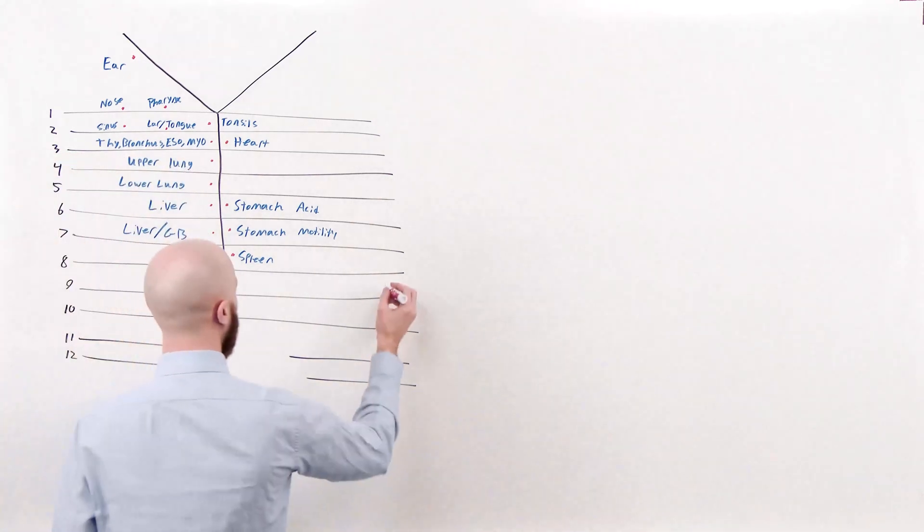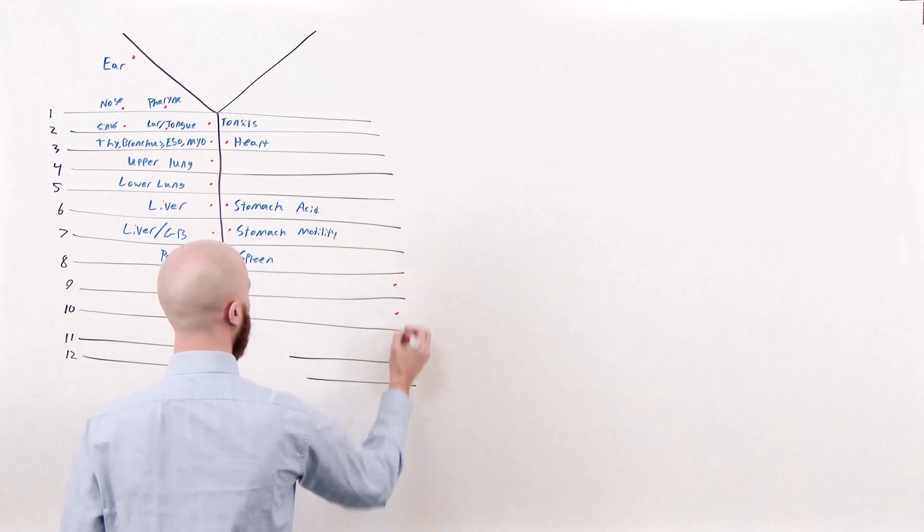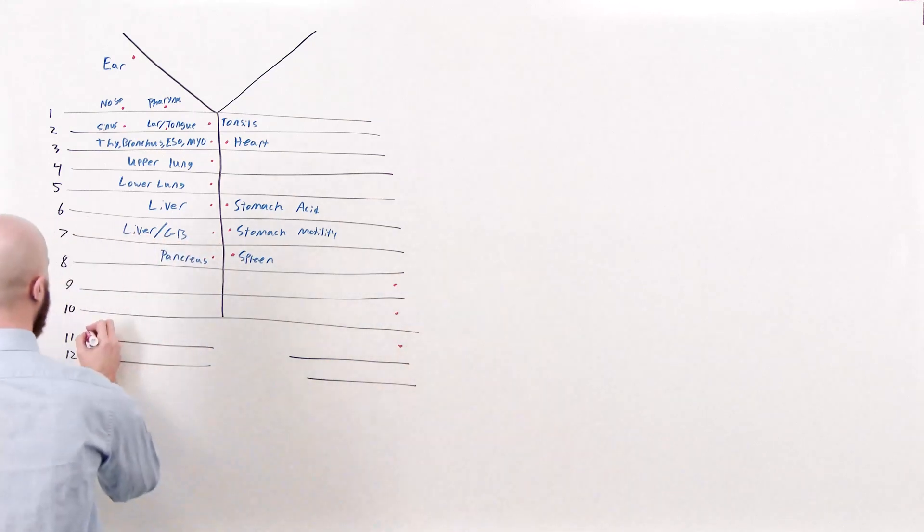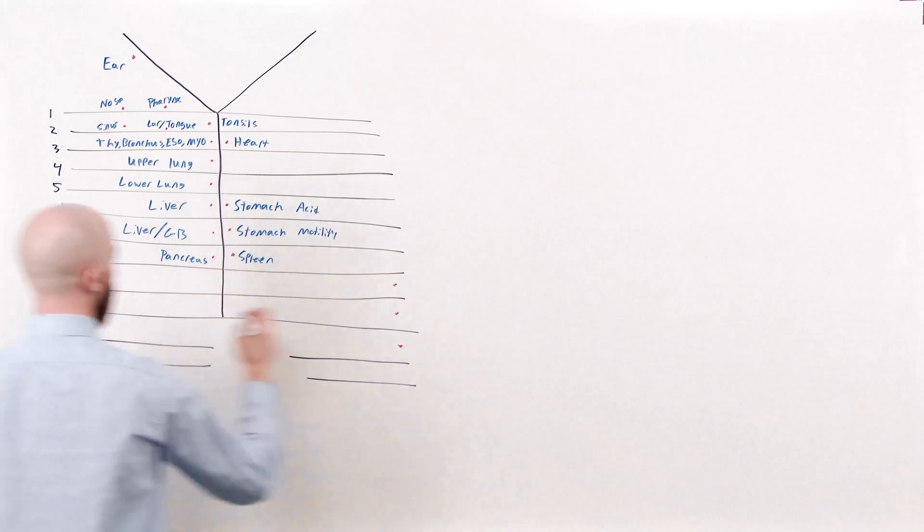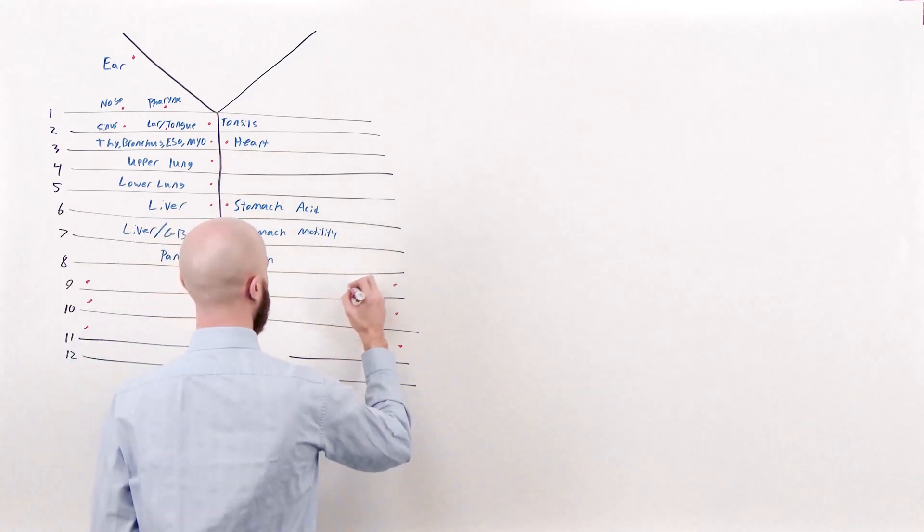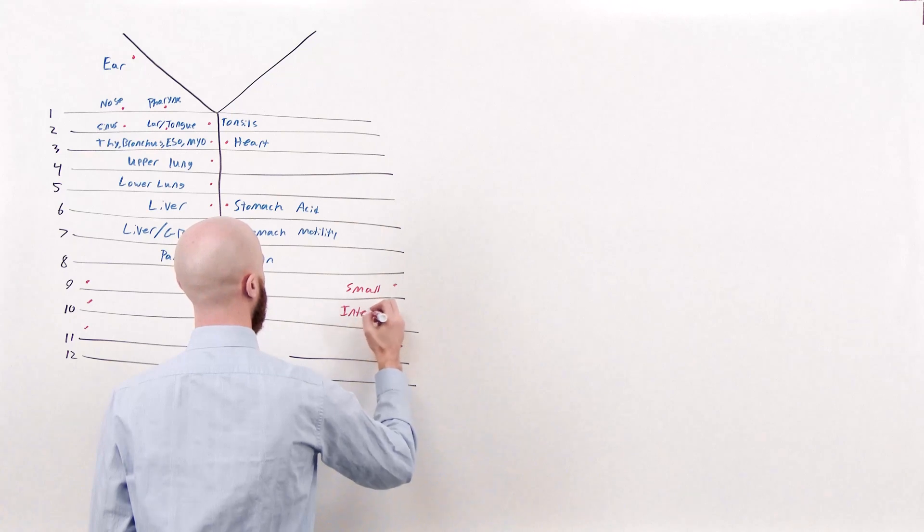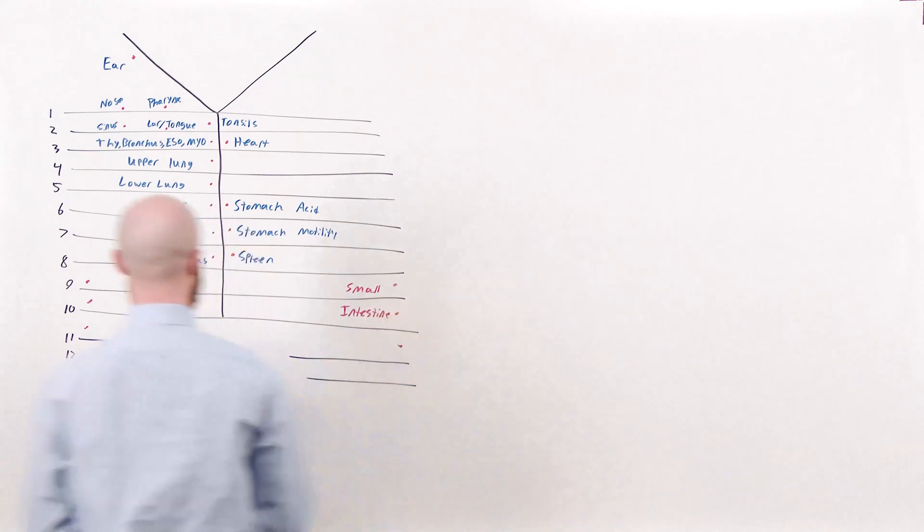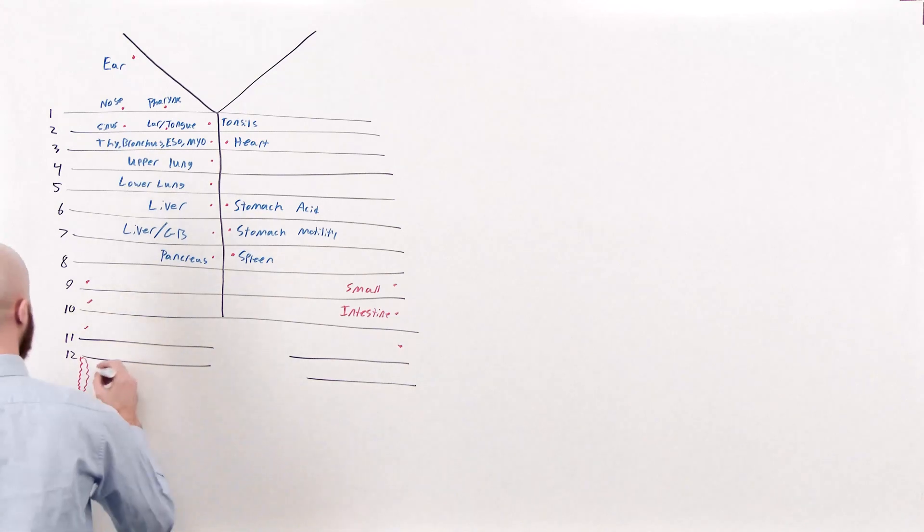So the next points that we're going to have are going to be out laterally on both sides. And these are going to represent your small intestines. You are also going to have a singular point that hangs off of rib 12 on the right at the tip. And this is going to be your appendix.